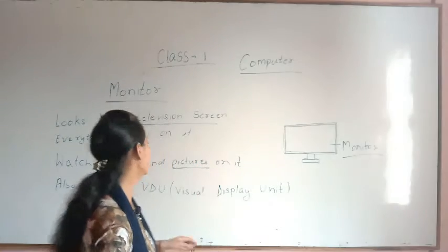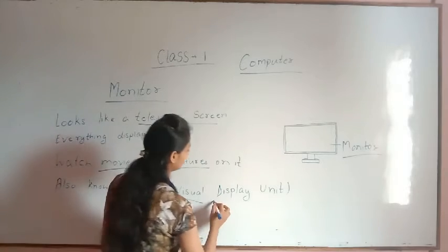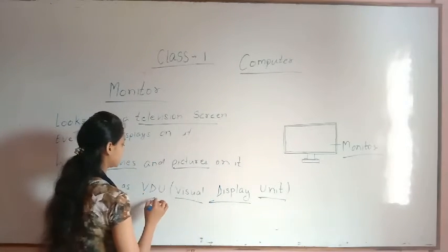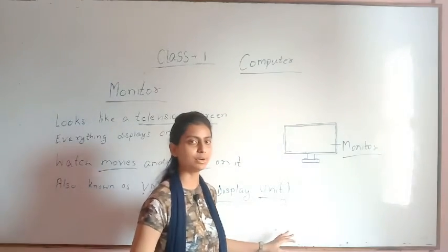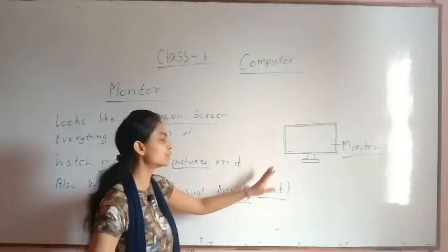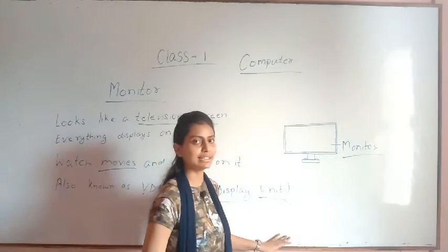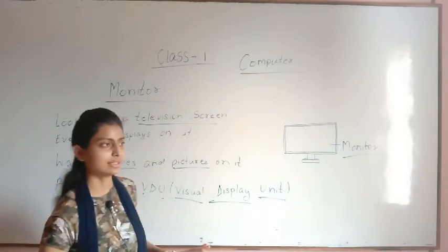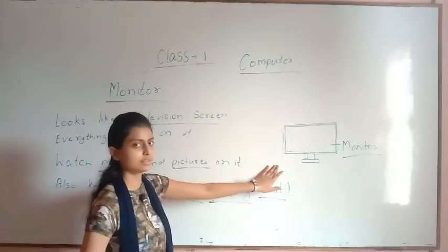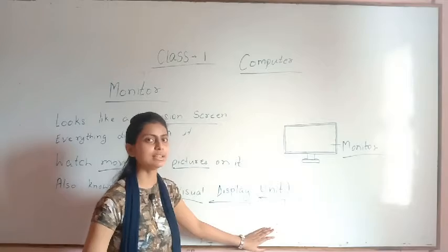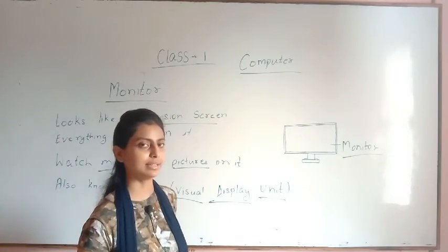The monitor is also known as VDU — V for Visual, D for Display, and U for Unit — so Visual Display Unit. Visual Display Unit means everything you do on the computer, it displays on the monitor. Just like CPU was called the brain of the computer, the monitor is known as the Visual Display Unit.